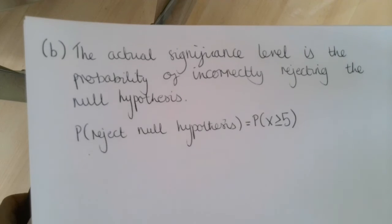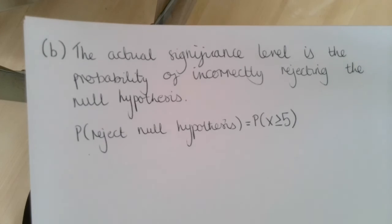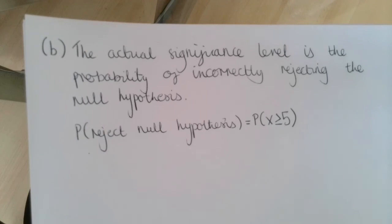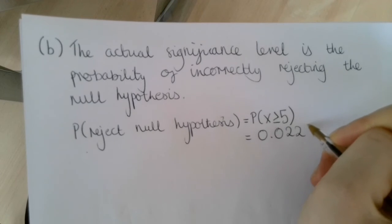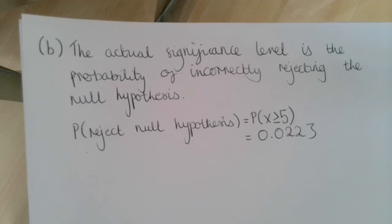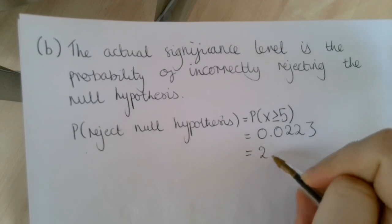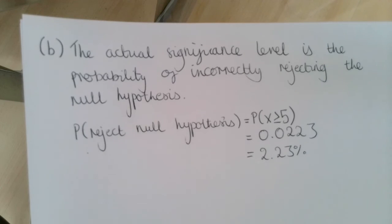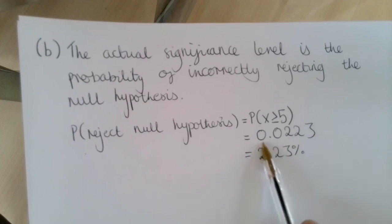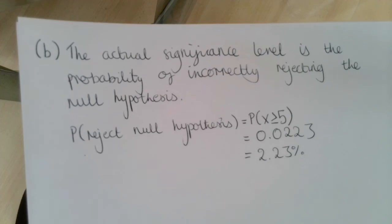The reason that is the probability we reject the hypothesis is that when x is greater than or equal to 5, we're in our critical region, which gives us sufficient evidence to reject the null hypothesis. This probability, which we found in part A, was equal to 0.0223 — that is the significance level of our hypothesis test. We always give significance levels in percentages, which is 2.23%. So in part A we used a 5% significance level, but the actual significance level is 2.23%, the probability that x is greater than or equal to 5, because 5 is our critical value.